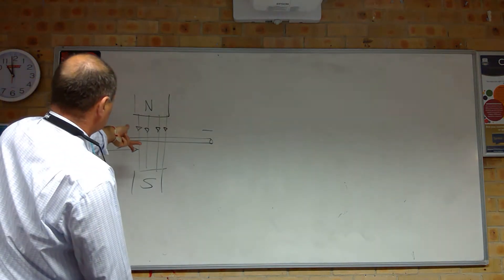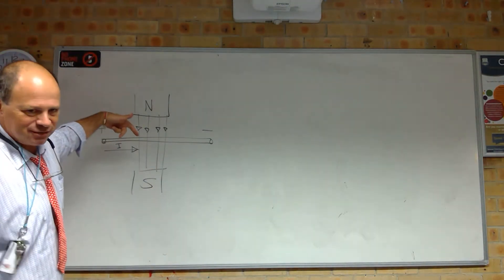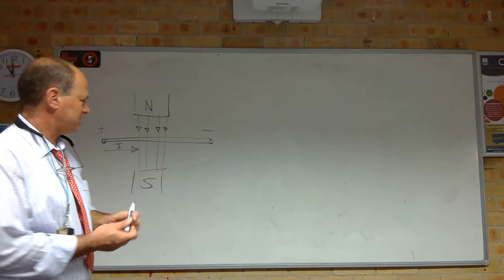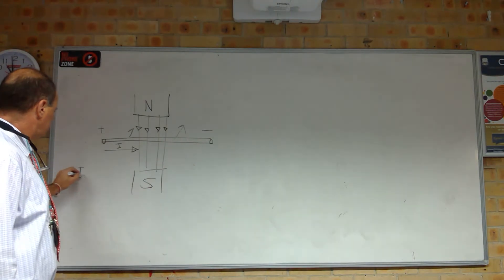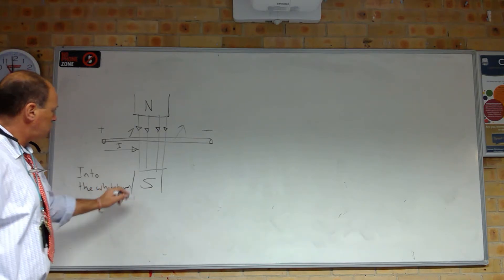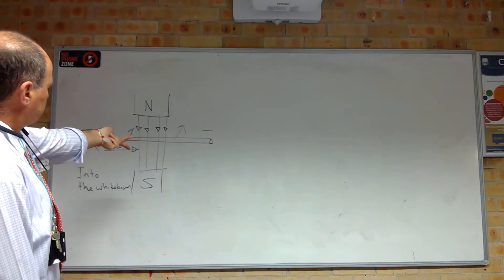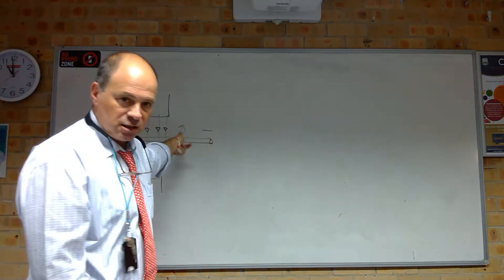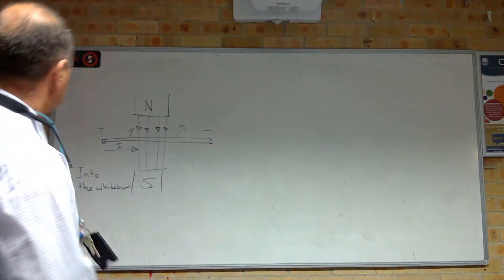Current going this way, field going down — this is painful, I made it really difficult for myself. Field going down, current going across, so force is going into the board, into the whiteboard. You're taking the things you know: field going straight down and current going from left to right, and that tells you force is going into the board. I've just done my wrist — think I heard it crack.